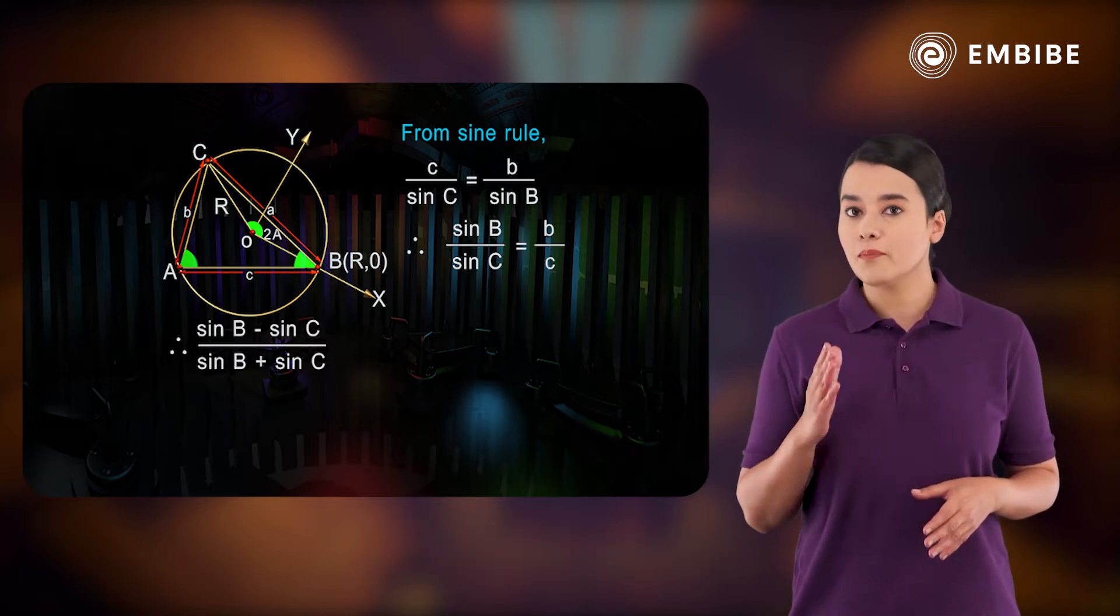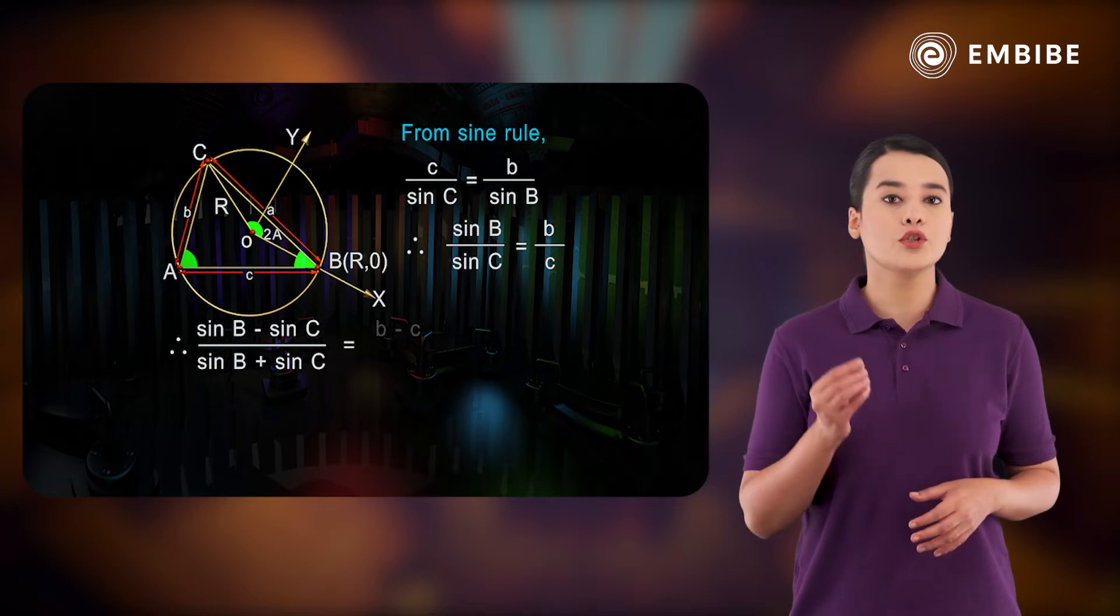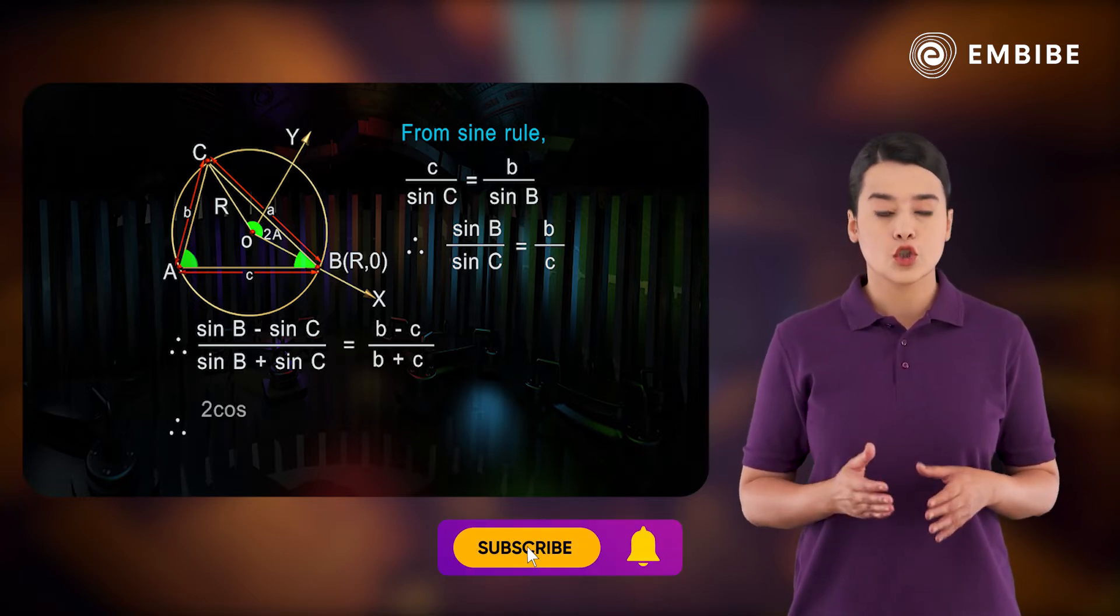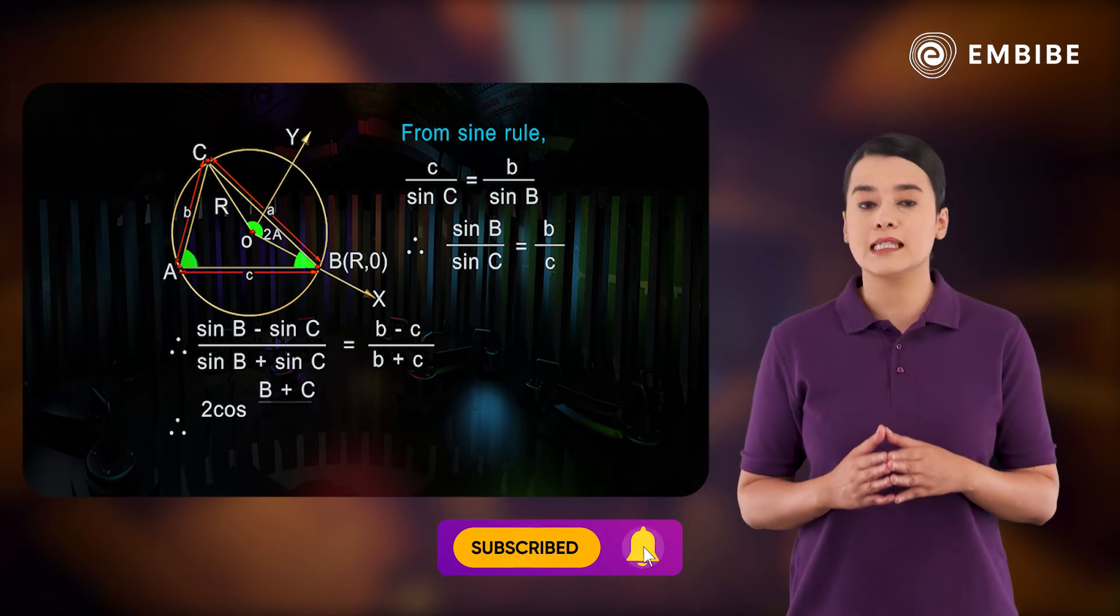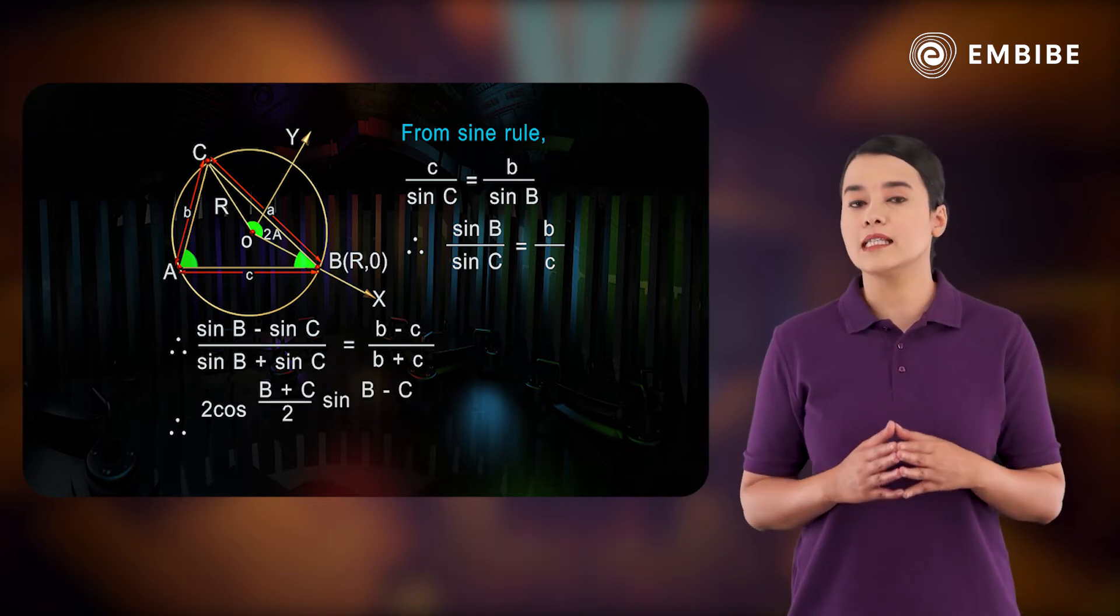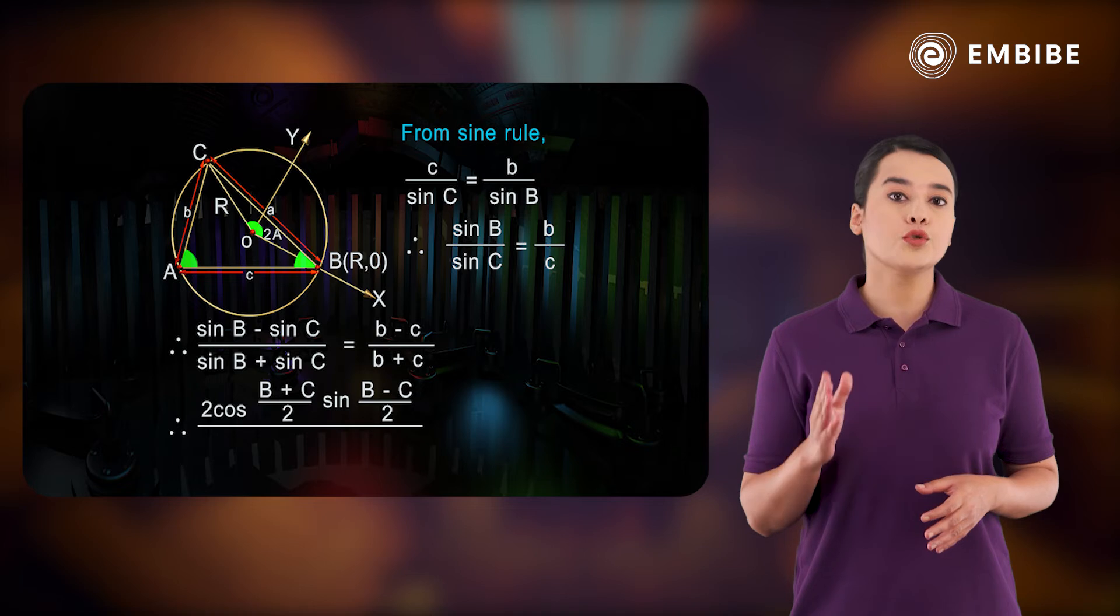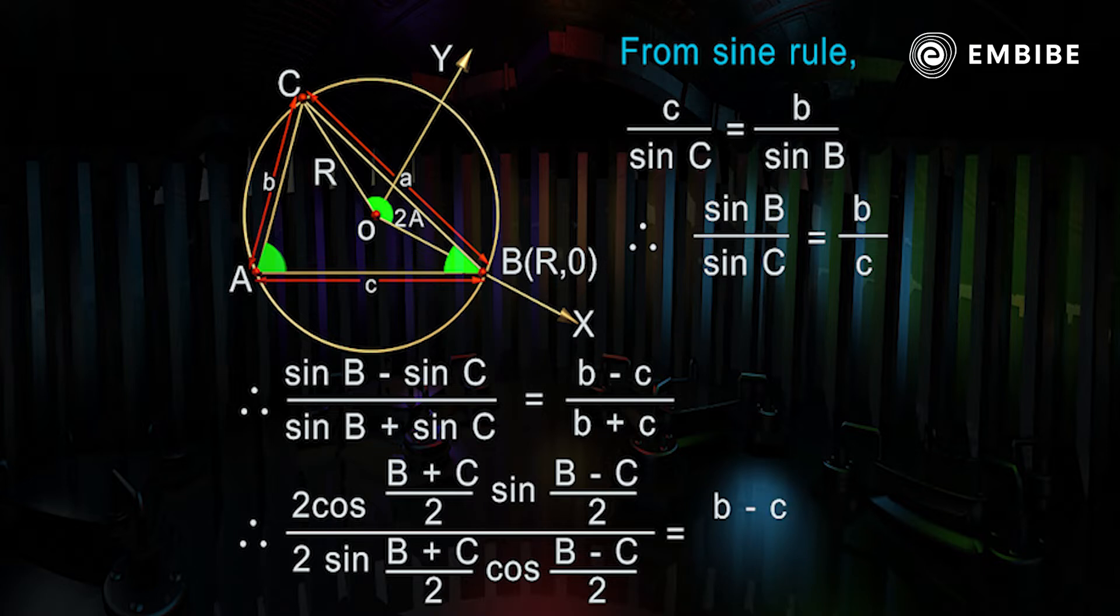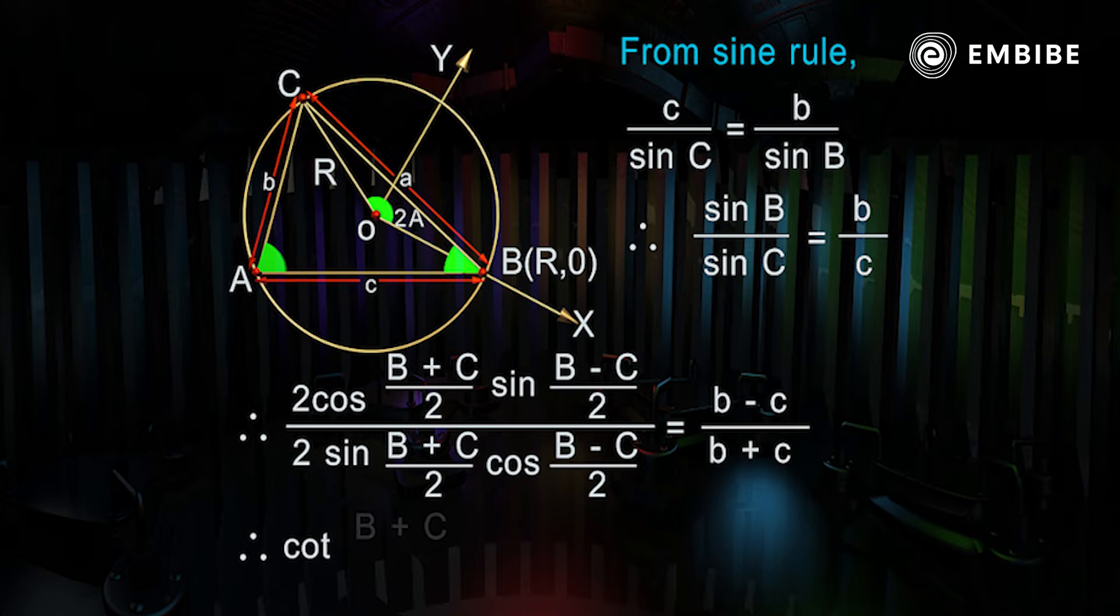So 2 cos of B plus C over 2 times sine of B minus C over 2, over 2 sine of B plus C over 2 times cos of B minus C over 2, equals b minus c over b plus c. Therefore, cot of B plus C over 2 times tan of B minus C over 2 equals b minus c over b plus c.